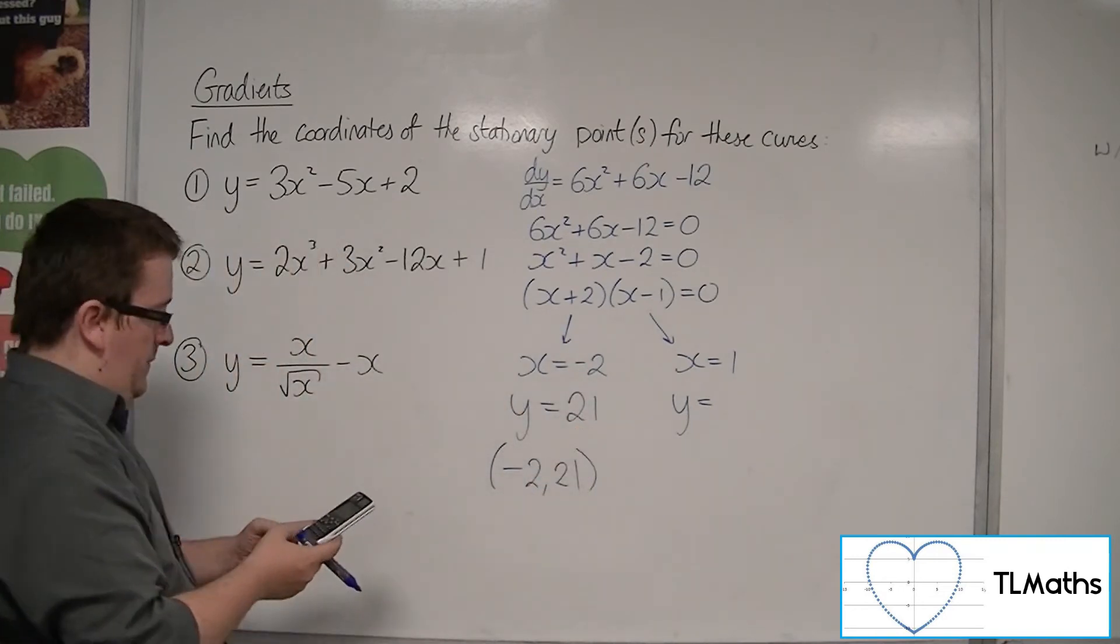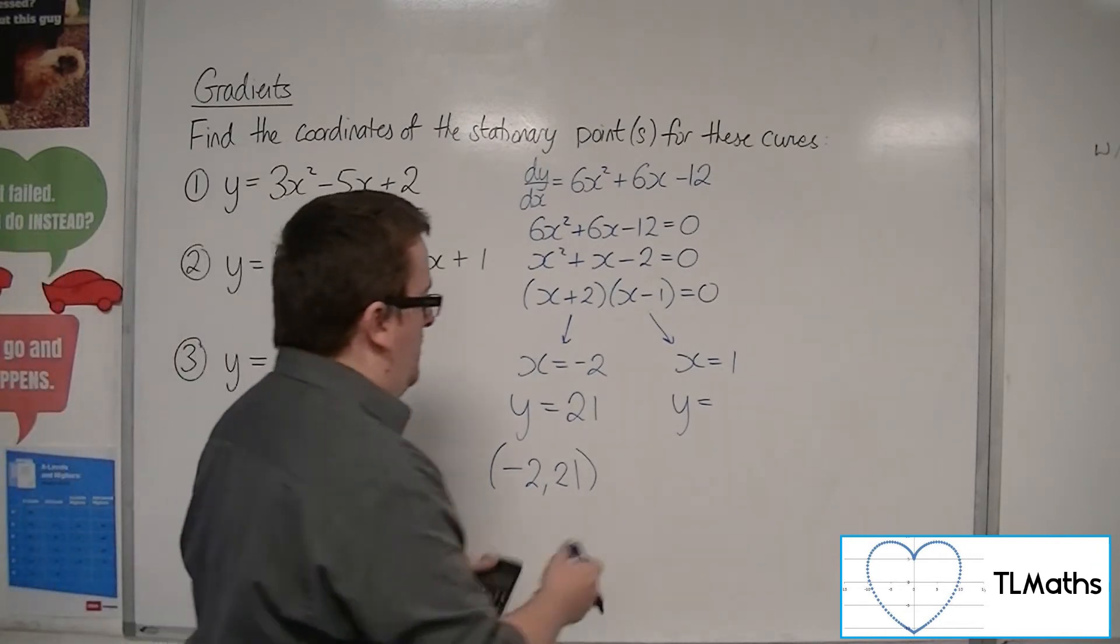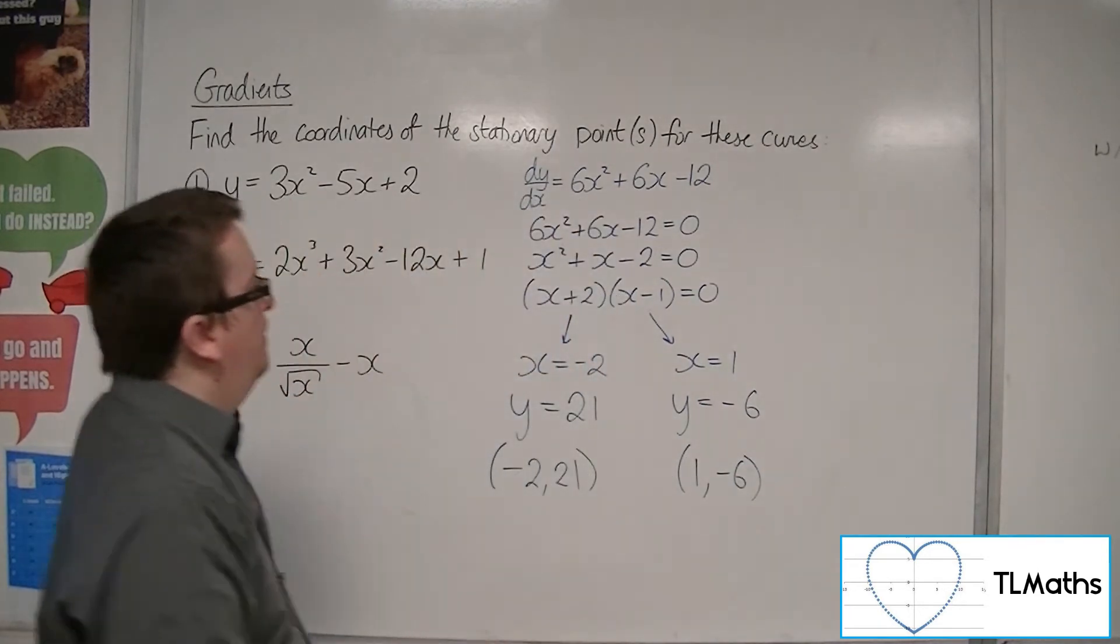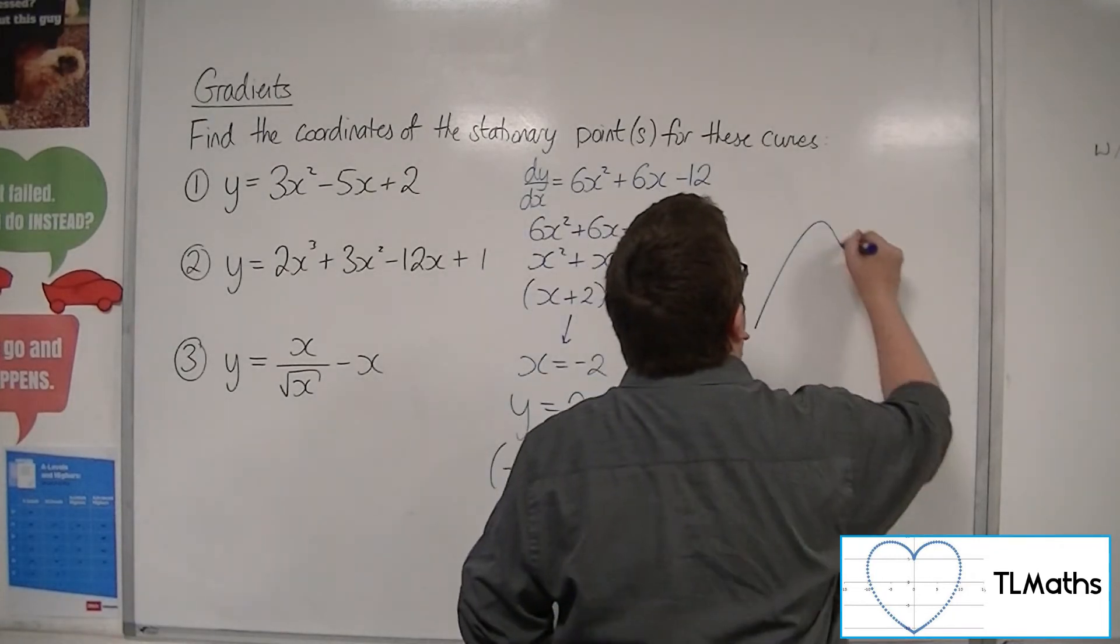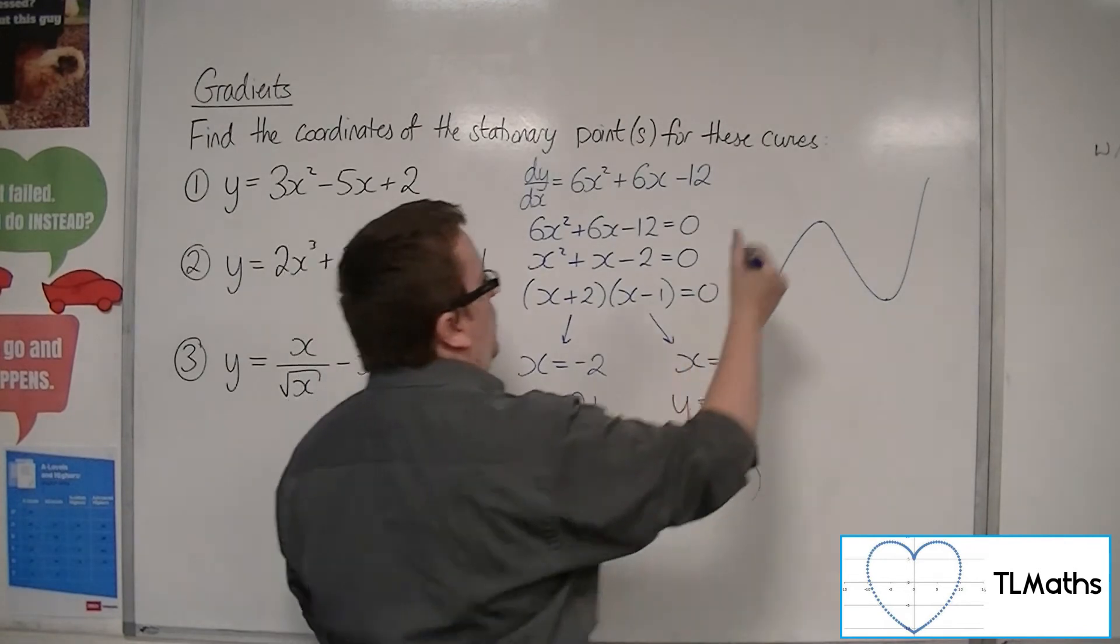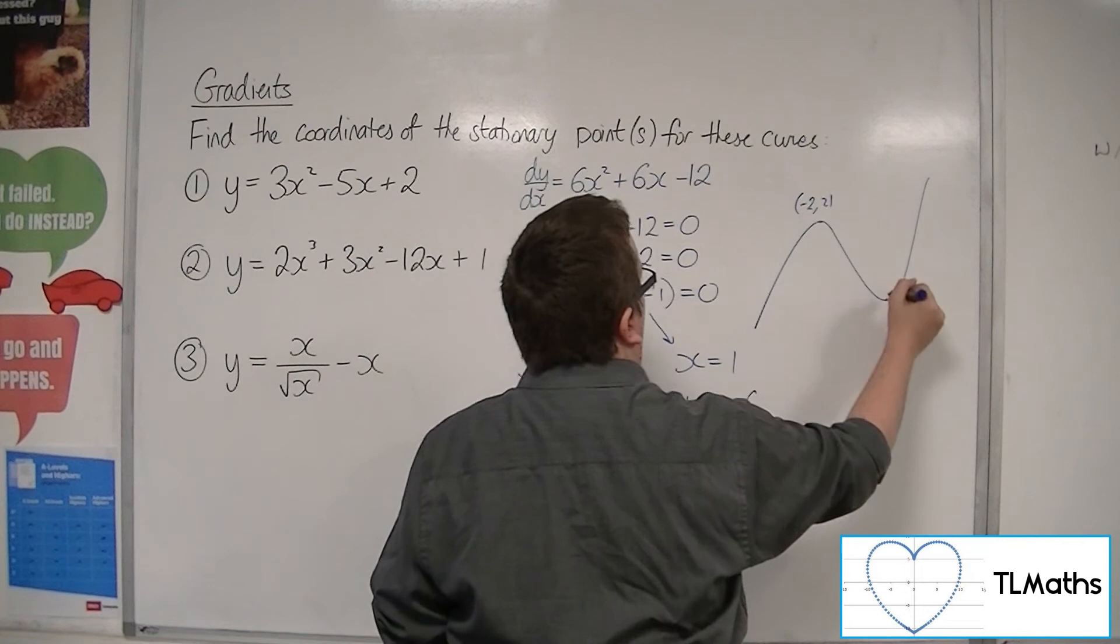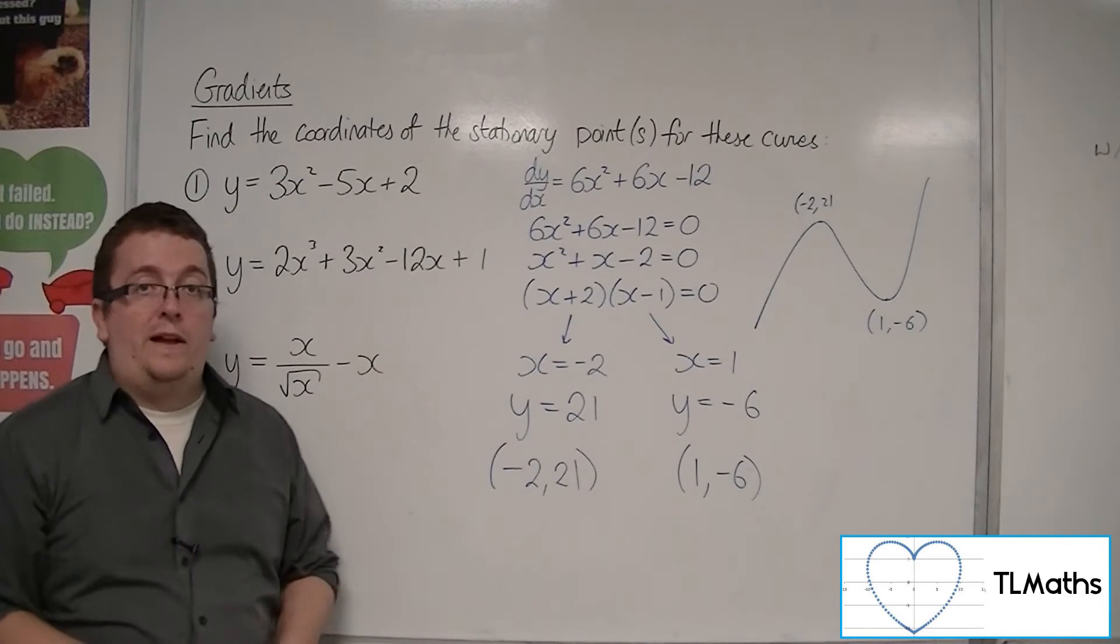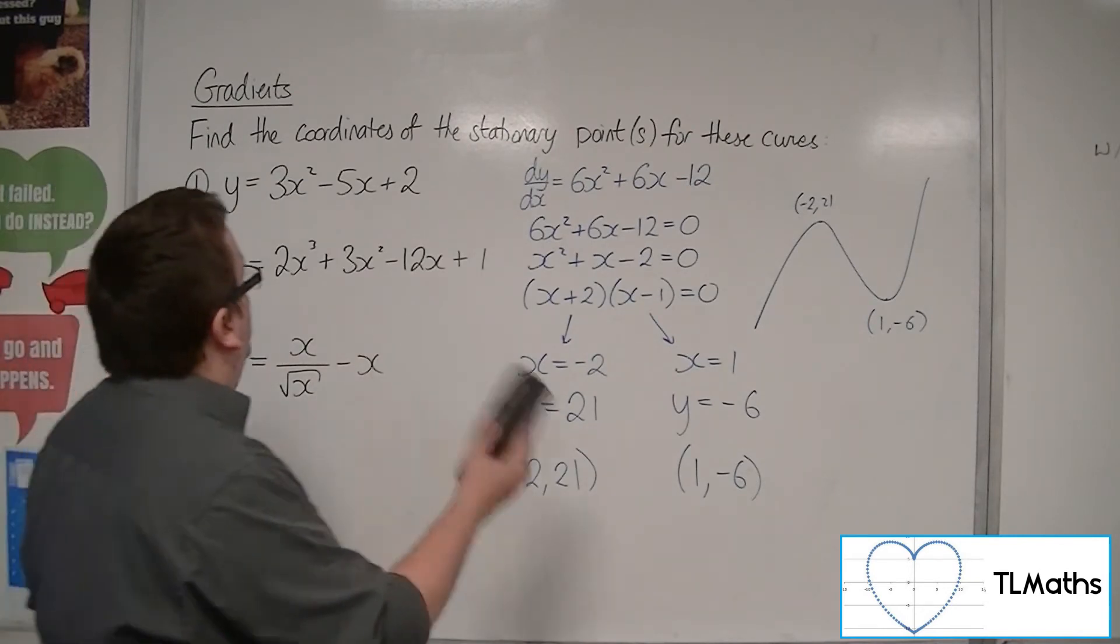And the second one is going to be 2 plus 3, take 12, plus 1, so minus 6. So 1 minus 6. So this is a cubic curve. It will look something like this. And what we've done is we've found the coordinates of those two turning points: minus 2, 21, and this one, 1 minus 6. That's what we found. That's number 2.